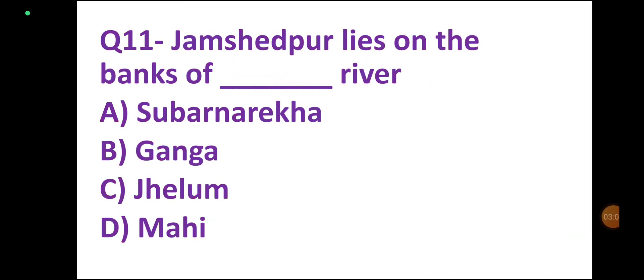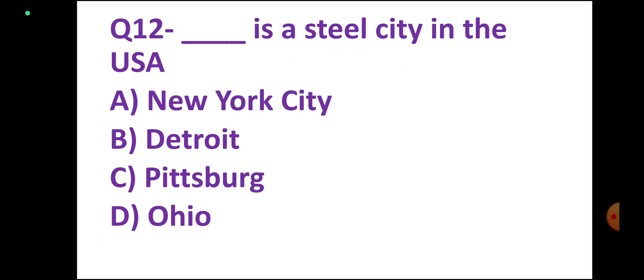Question number 11. Jamshedpur lies on the bank of DASH river. Options: Subarnarekha, Ganga, Jhelum, Mahi. Correct answer: Subarnarekha. Option A. Correct.